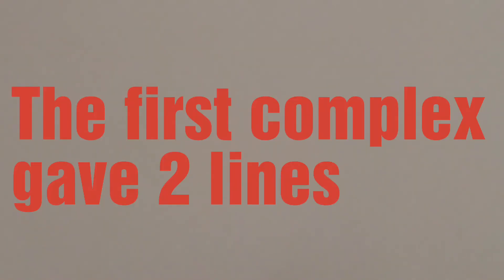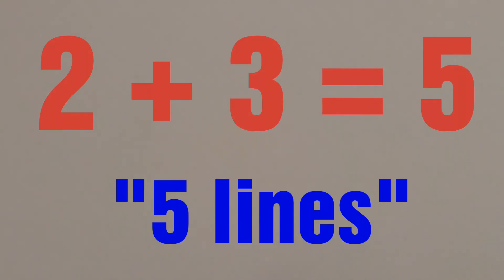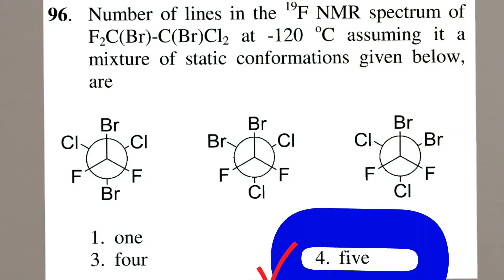The first complex gave two lines and the second and third complex gave three lines. So total lines will be 5. So option D will be the right choice.